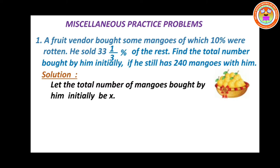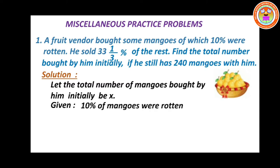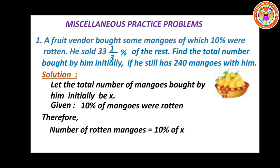Let the total number of mangoes bought by him initially be x. We do not know how much mangoes initially he bought, so let us assume that to be x. What is given: 10 percentage of mangoes were rotten. So therefore, number of rotten mangoes equal to 10 percentage of x — that is, from the initially bought mangoes, 10 percentage were rotten. So you can write 10 percentage of x.